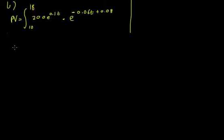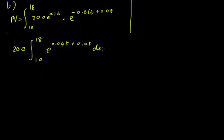So what we can do is we can take out 200, and I'll still leave it up between 18 and 10, e to the 0.1t multiplied by e to the negative 0.06t plus 0.08. Well, that is 0.1 minus 0.06t, and we've still got that bit, plus 0.08 dt.